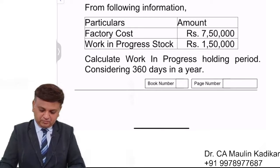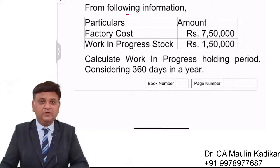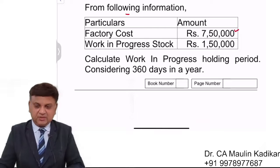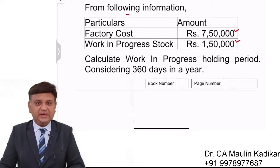Next question. From the following information, the factory cost is $750,000 and WIP stock is $150,000.